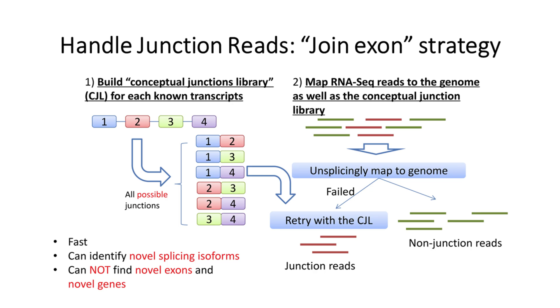Specifically, there are two main kinds of strategies to this problem at present. One is join exon. The first step in this strategy is to build all possible junctions based on all the exons in the known transcript. It should be noted that the junction in this library may not be known but includes all possible combinations. For example, four exons correspond to six combinations. After that, the usual mapping is carried out.